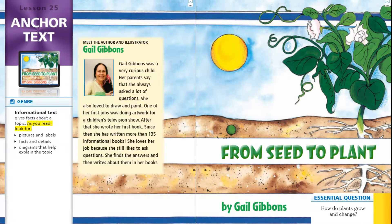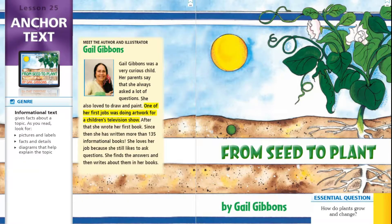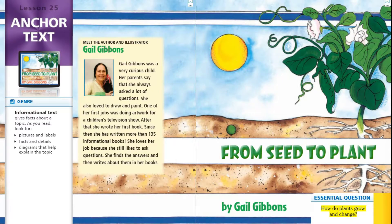As you read, look for pictures and labels, facts and details, and diagrams that help explain the topic. Let's meet the author and illustrator, Gail Gibbons. Gail Gibbons was a very curious child — her parents say she always asked a lot of questions. She loved to draw and paint. One of her first jobs was doing artwork for a children's television show. After that, she wrote her first book, and since then has written more than 135 informational books. She loves her job because she still likes to ask questions, finds the answers, and writes about them. As we read, let's think about our essential question: How do plants grow and change?